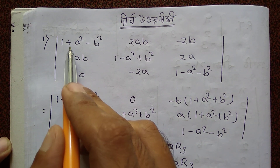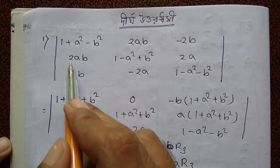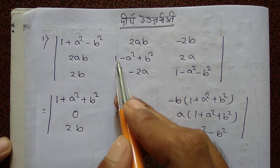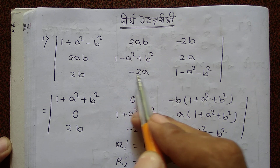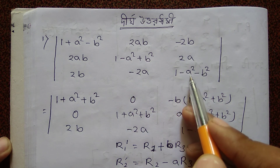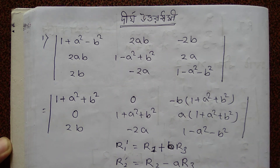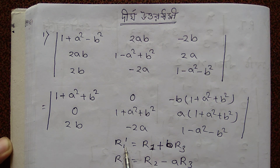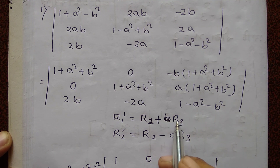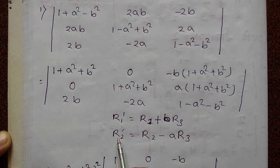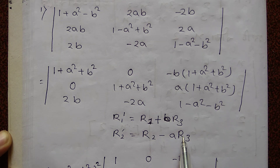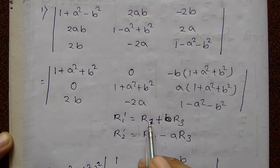Determine the determinant with first row: 1 plus a square minus b square, 2ab, 2b; second row: 2ab, a, 1 minus a square plus b square; third row: minus 2a, minus 2b, 2a, 1 minus a square minus b square. First operation: R1 prime equal to R1 plus b into R3, R2 prime equal to R2 minus a into R3.